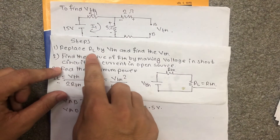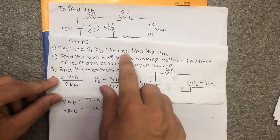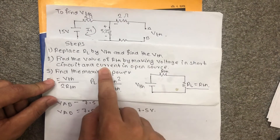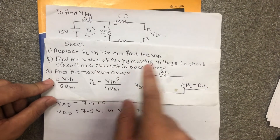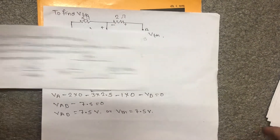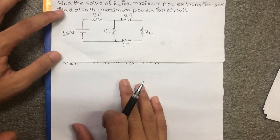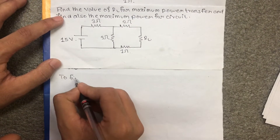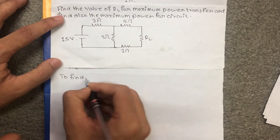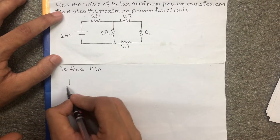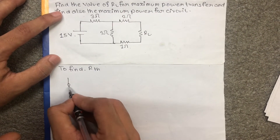Now we replace RL by open circuit and find Rth. To find the value of Rth, we make the voltage source short circuit and the current source open circuit. Then we calculate Rth by looking into the terminals.